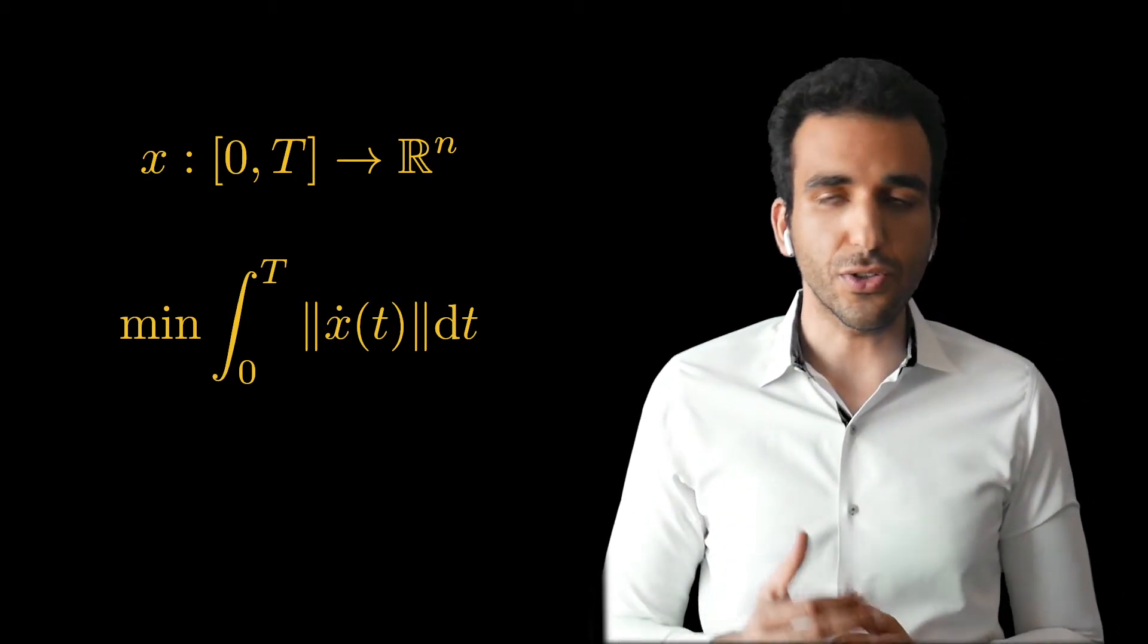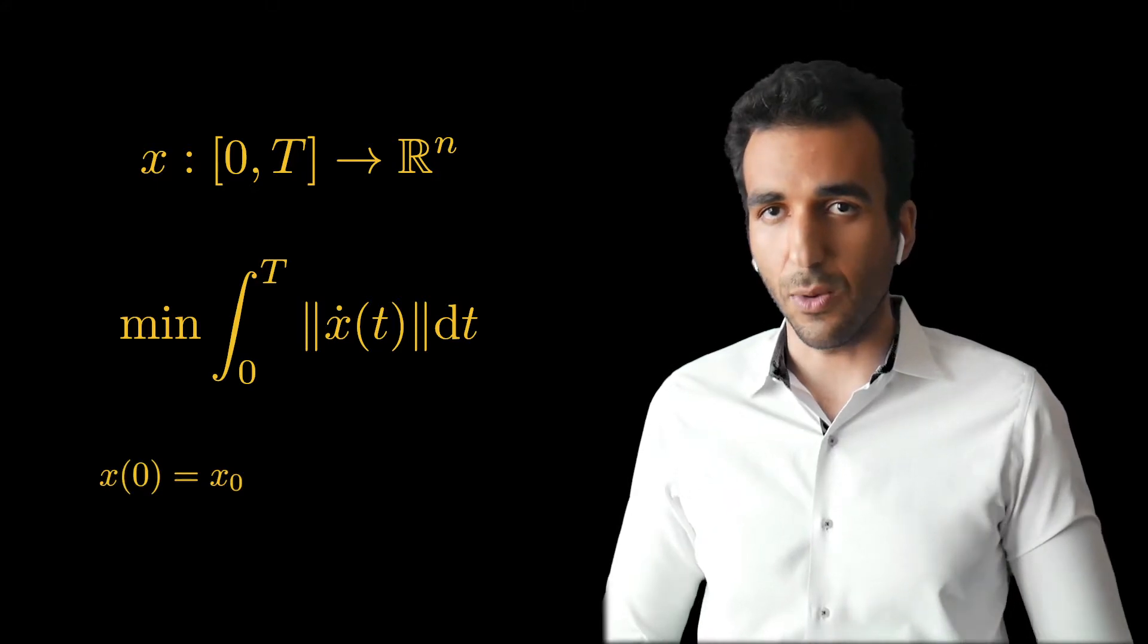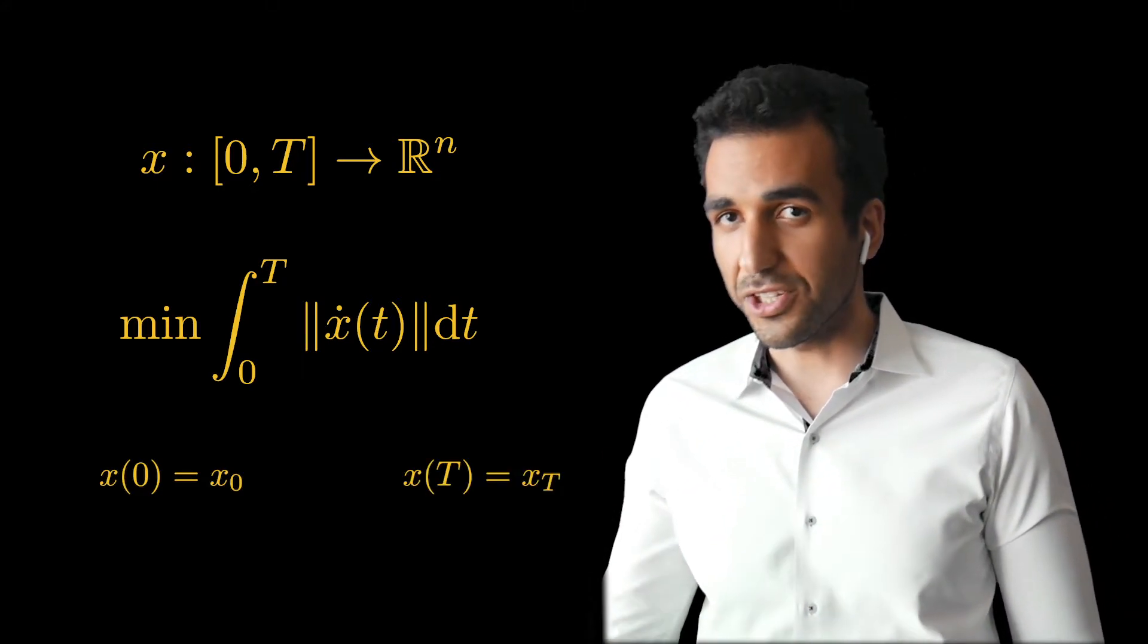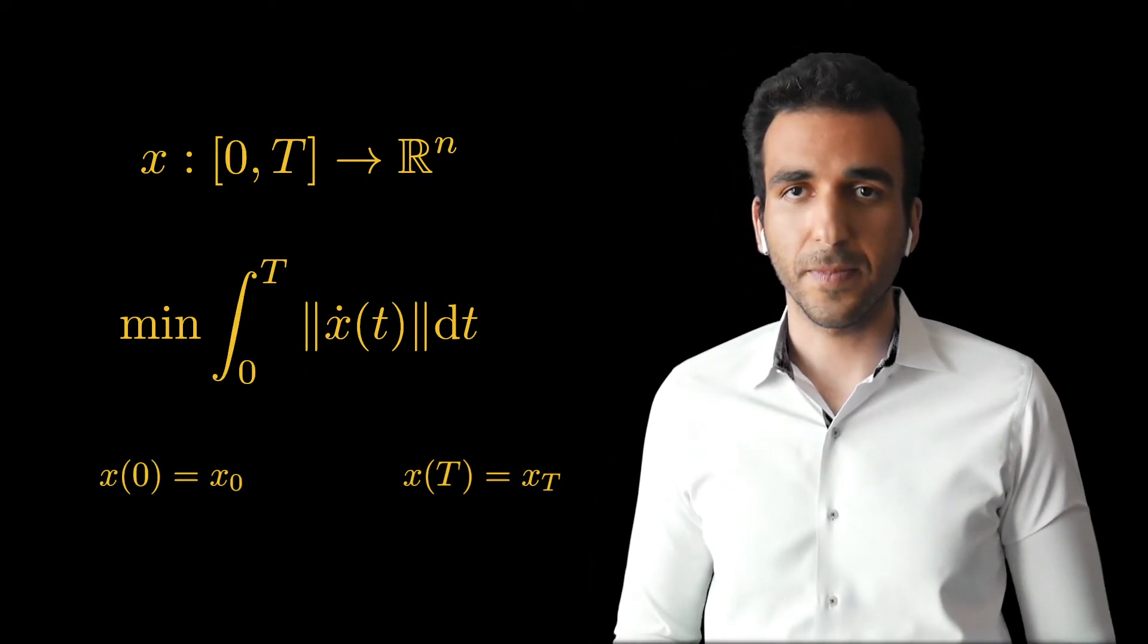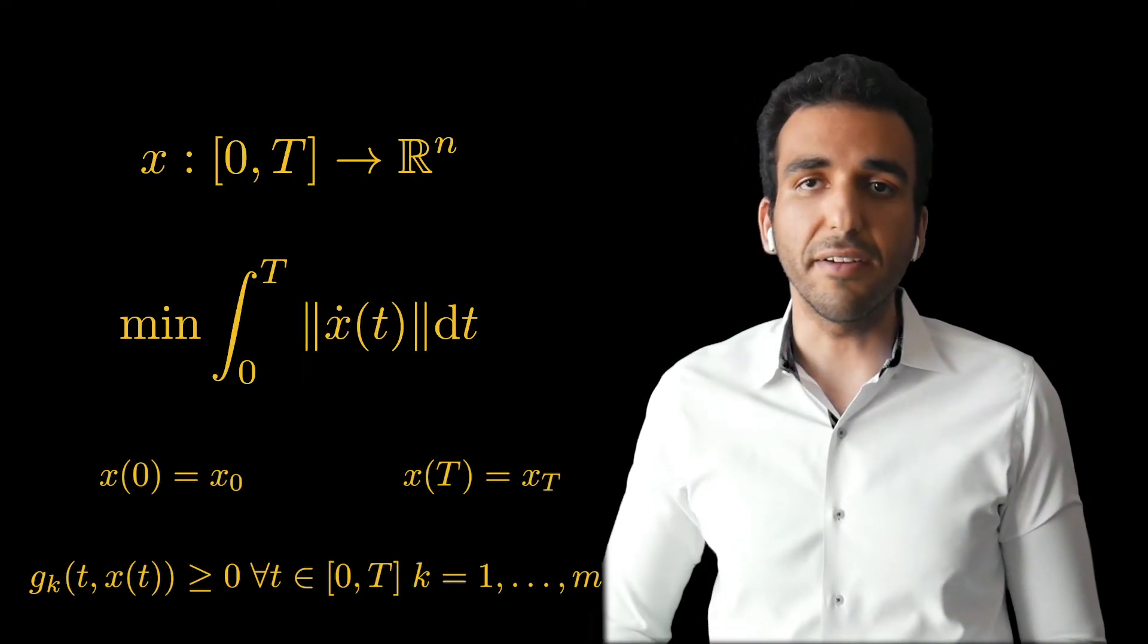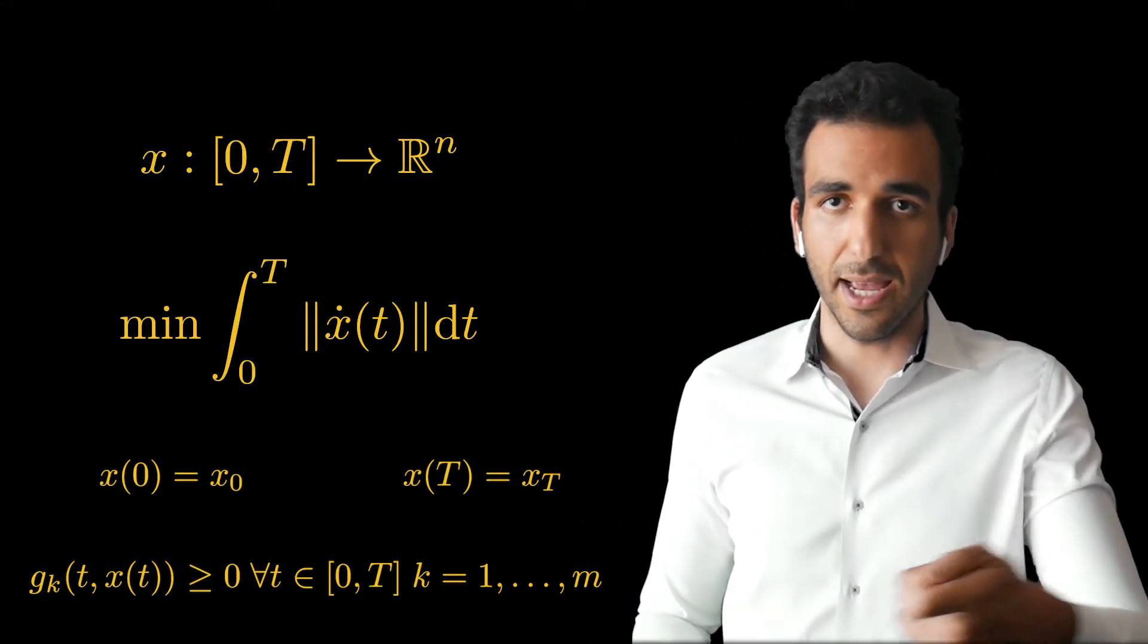I also have a bunch of constraints. This constraint here says that I want to start from x zero. This constraint is saying that I want to reach x_T. And these constraints are for collision avoidance.